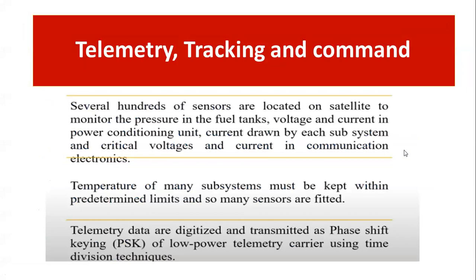Several hundreds of sensors are located on a satellite to monitor parameters such as fuel tank pressure, voltage and current in the power conditioning unit, current drawn by each subsystem, and critical voltages in communication electronics. If the temperature of any subsystem goes beyond predetermined limits, sensors will alert the system. Telemetry data is digitized and encoded using phase shift keying of a low-power telemetry carrier with time division multiplexing (TDM) techniques.